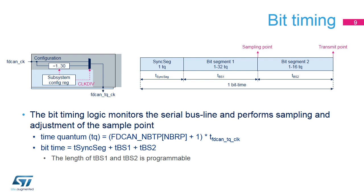The data bit-time applies when operating in FD mode and data is transmitted at the high data rate. In order to adjust the on-chip bus clock, the CAN controller may shorten or prolong the length of a bit by an integer number of quanta. The maximum value of these bit-time adjustments is termed the Synchronization Jump Width, or SJW, which is programmable from 1 to 4 time quanta.